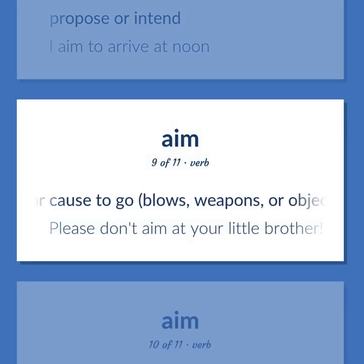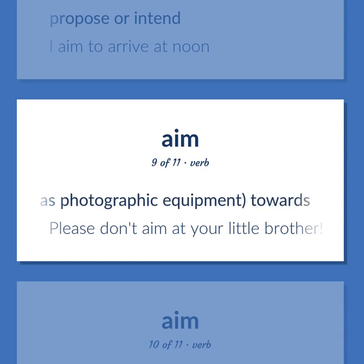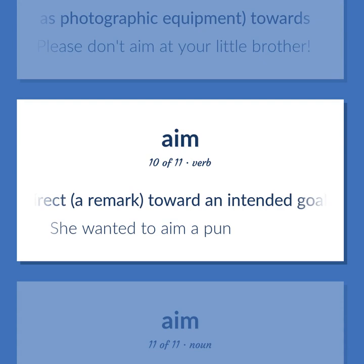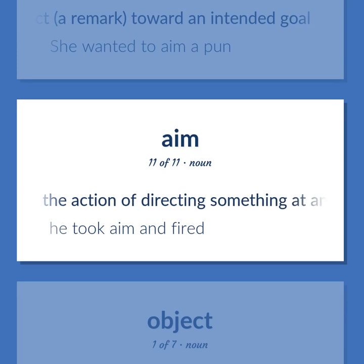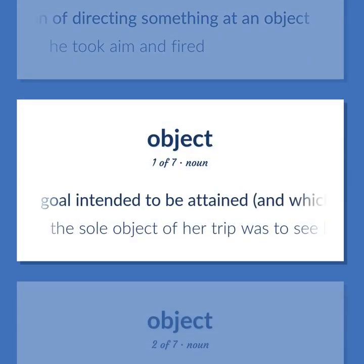Point or cause to go — blows, weapons, or objects such as photographic equipment — towards. Please don't aim at your little brother. Direct a remark toward an intended goal. She wanted to aim a pun. The action of directing something at an object. He took aim and fired. The goal intended to be attained, and which is believed to be attainable.